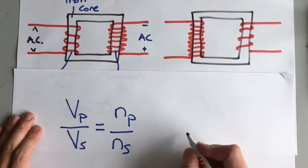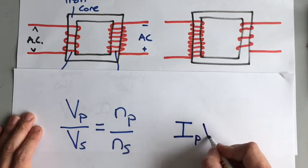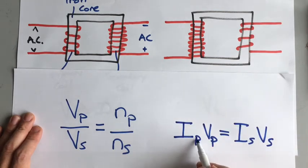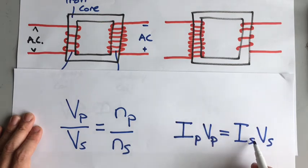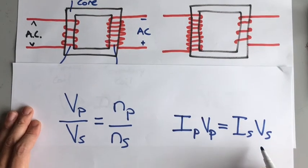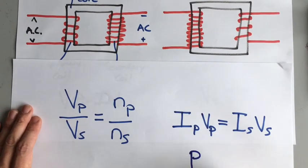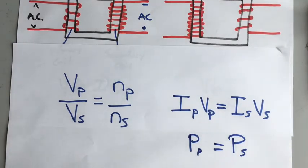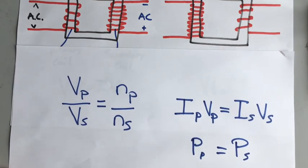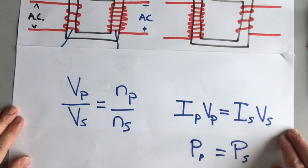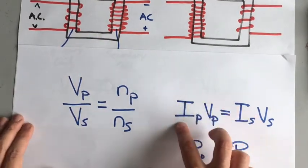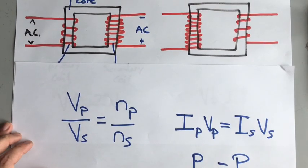Then we can relate that to current, and in the same way it's based on ratios. So IpVp = IsVs — that's the current in the primary coil times the voltage in the primary coil equals the current in the secondary coil times the voltage in the secondary coil. Since power is current times voltage, what that equation is really saying is the power in the primary coil is the same as the power in the secondary coil, so power always stays the same. Power is the amount of energy our circuit is transferring, and so these two equations can tell you the relationship between the coils, how the voltage is changing, and therefore how the current is changing as well. And that is how and why we need transformers.